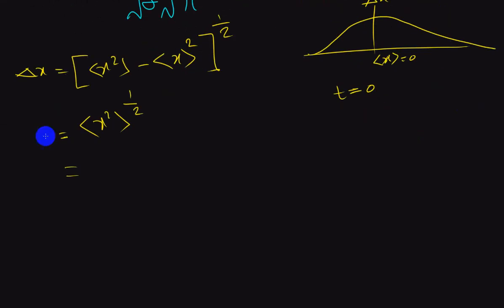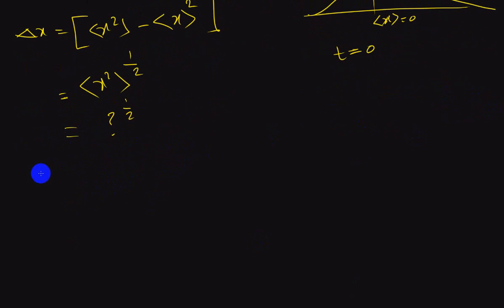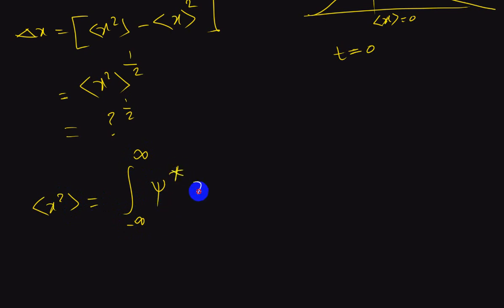Now we find what is the expectation value of x squared. The expectation value of x squared is the integral from minus infinity to plus infinity of psi star, times x squared, times psi, dx.